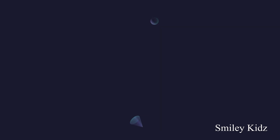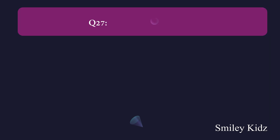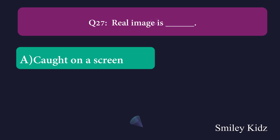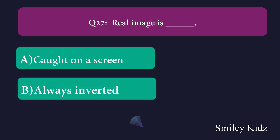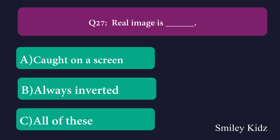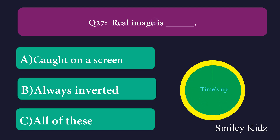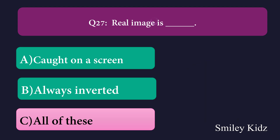Question number twenty-seven: Real image is dash. Option A: caught on a screen, Option B: always inverted, Option C: all of these. The right answer is all of these. Real image is caught on a screen and is always inverted.